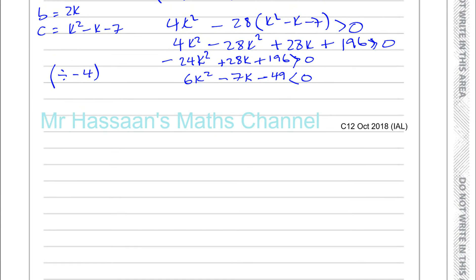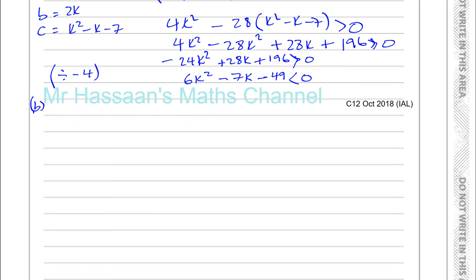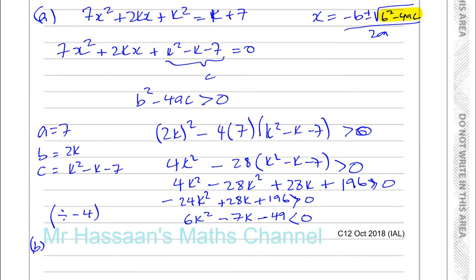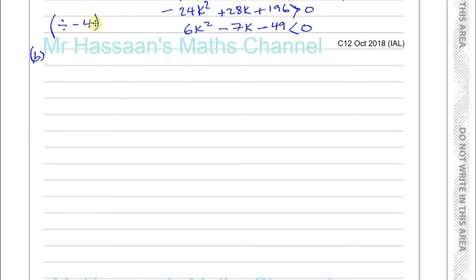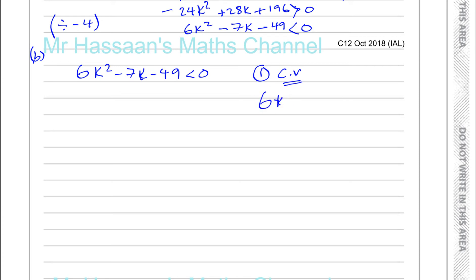Part b asks us to find the possible range of values of k by solving the quadratic inequality 6k² - 7k - 49 < 0. First, we find the critical values by solving 6k² - 7k - 49 = 0.